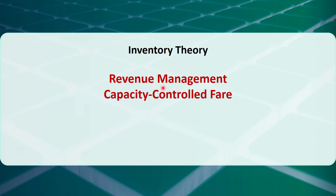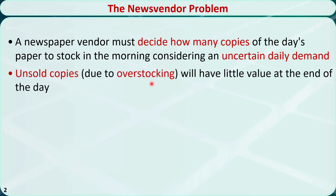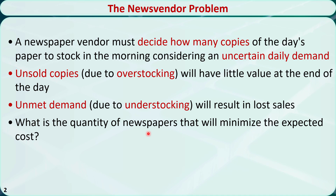We introduced the news vendor inventory model in a previous video. The problem can be described like this: a newspaper vendor must decide how many copies of the newspaper to stock in the morning. The demand is uncertain. Unsold copies due to overstocking will have little value at the end of the day. Unmet demand due to understocking will result in lost sales. What is the best quantity of newspapers that will minimize the expected total cost? The key characteristic of this type of problem is that it involves a penalty or cost for both overstocking and understocking because the demand is uncertain.